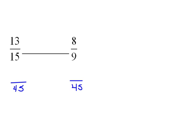So I have to multiply fifteen times three to get forty-five. So I'm going to do the same thing to the top. Thirteen times three would be thirty-nine. And for the second fraction, nine times five would be forty-five. So eight times five would be forty. Now we can see that thirty-nine is smaller than forty or less than. So our thirteen fifteenths is actually less than eight ninths.